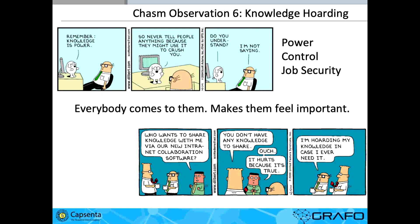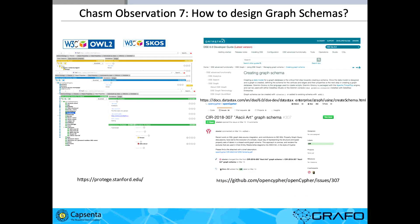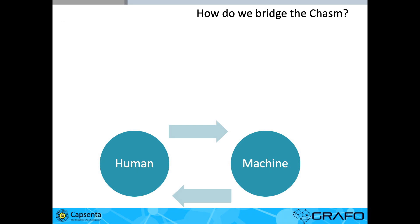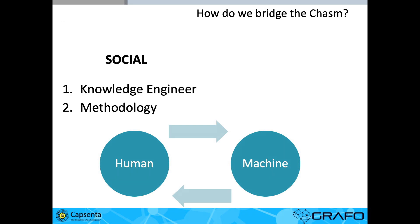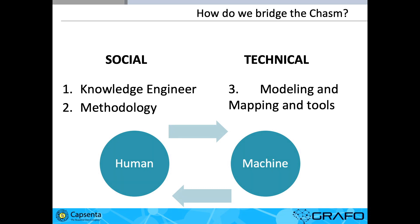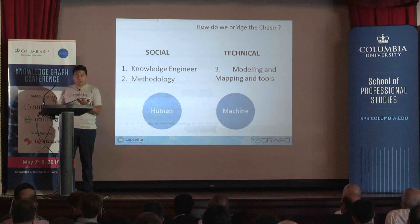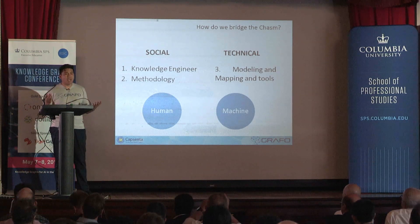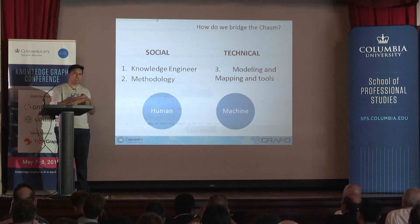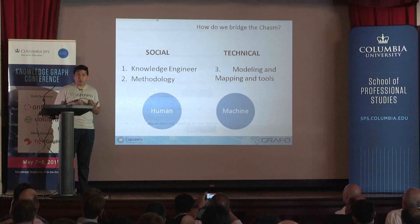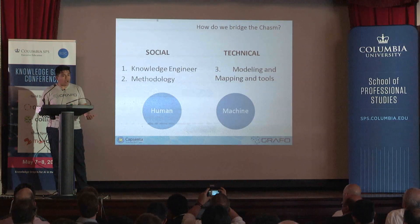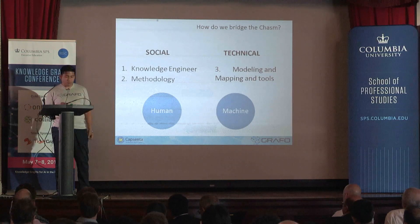How do we create the schemas? Graphs are often about schema-last, we can do this quickly. But once you get into enterprise data, you realize we need schemas, and there are no good graph modeling schema tools out there. To bridge this chasm there are two aspects: the social one — what I'm calling the knowledge engineer — and we need methodologies. From a technical point of view, we need modeling and mapping tools. We need to understand the balance between humans and machines, because in the machine learning AI world we want to automate everything, but we have to be very careful.